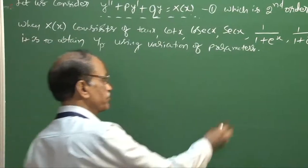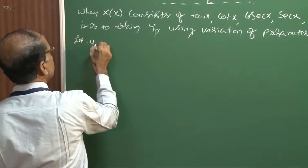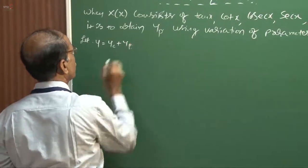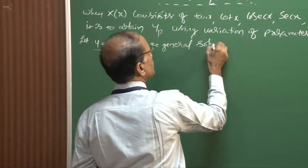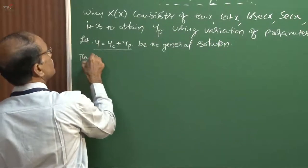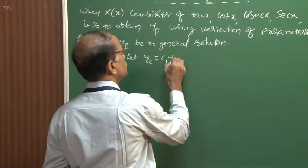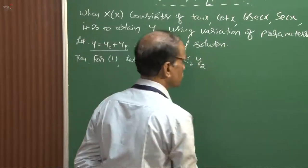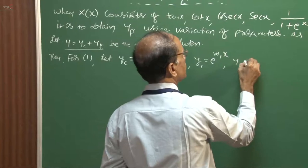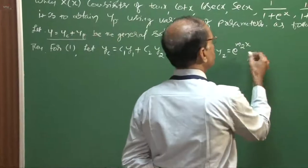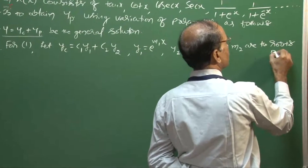Variation of parameters proceeds as follows. Let y_p be part of the general solution y = y_c + y_p. Let y_c = c₁y₁ + c₂y₂, where y₁ = e^{m₁x} and y₂ = e^{m₂x}, and where m₁ and m₂ are the roots of the auxiliary equation.